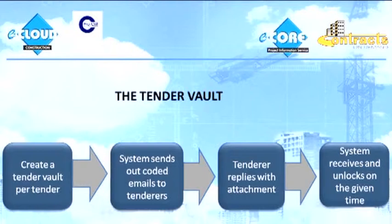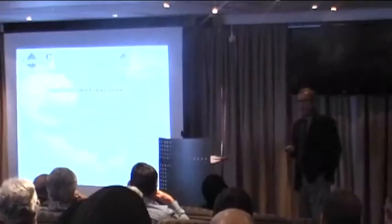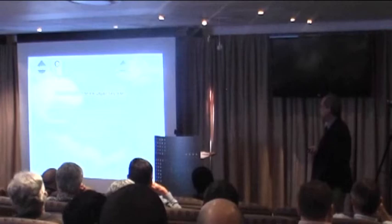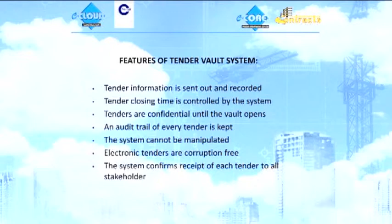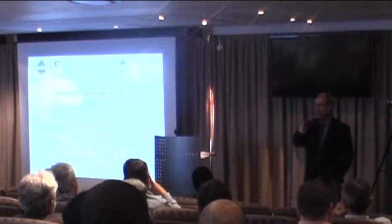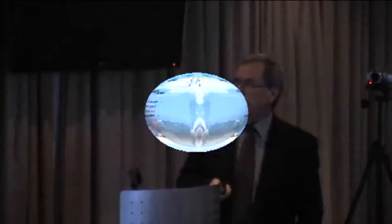So same process: create the tender vault, the system sends out a coded email to the tenderers, the tenderer replies with an attachment, and the system unlocks on a given time. And that's it. I think I've actually dealt with the features of the tender system, so I'm not going to go through it in detail. The stuff's confidential and there's an audit trail. The system cannot be manipulated. So the process is corruption-free. It doesn't get rid of the collusion party that happened the night before, but at least the actual tender process is clear.